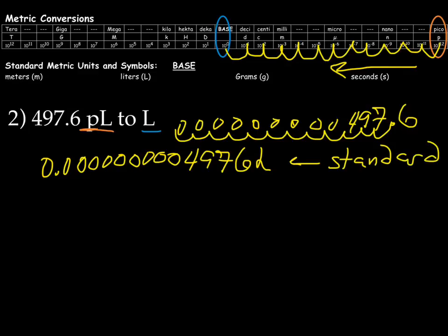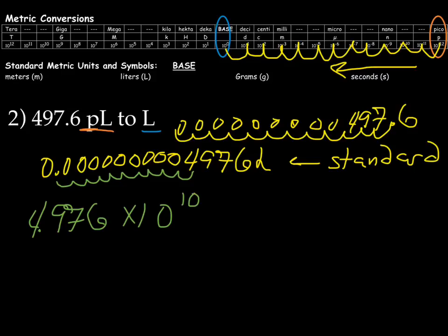Now, let's try going to scientific notation. Remember, it needs to be one number in front of the decimal. The number needs to be between one and nine. So we'll end up with 4.976 times ten to the... How many times do we need to move the decimal? One, two, three, four, five, six, seven, eight, nine, ten. Ten times, ten to the tenth. And this number here is a small number. It's smaller than one, so the exponent is going to be a negative ten liters.